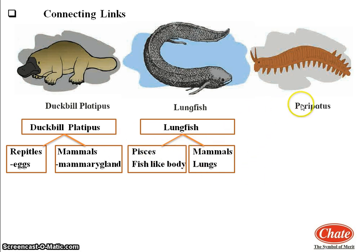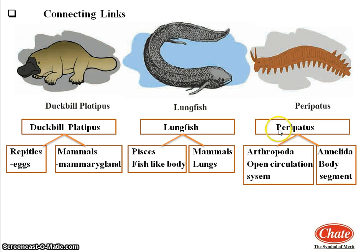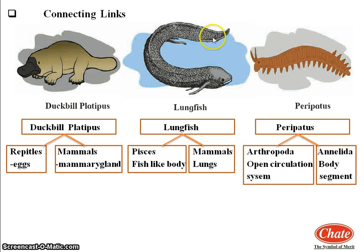The third example is peripatus. Peripatus has an open circulatory system like arthropoda, but a segmented body like annelida. So peripatus shows a connecting link between arthropoda and annelida. From all three examples, it is indicated that mammals evolved from reptiles and amphibians evolved from fishes.